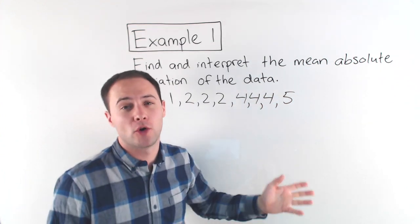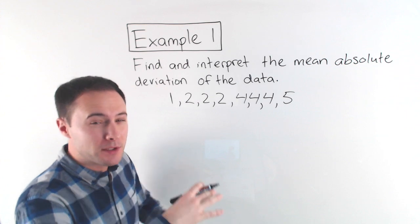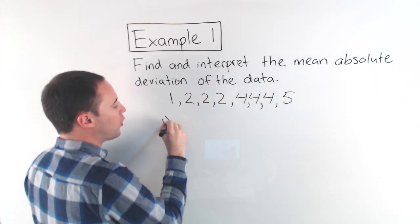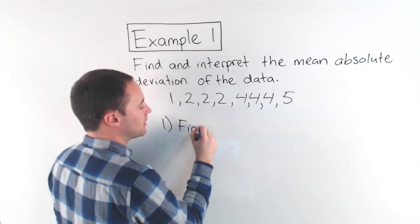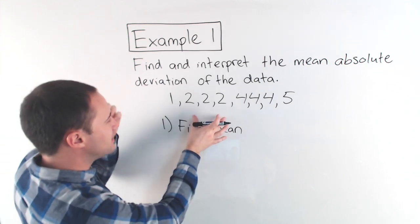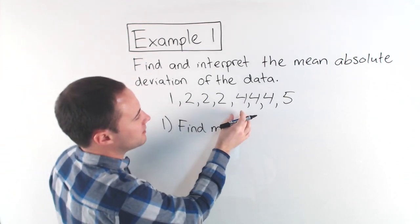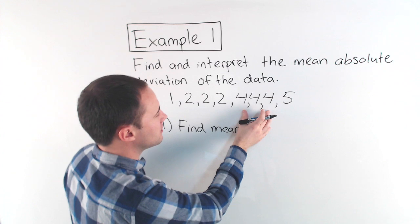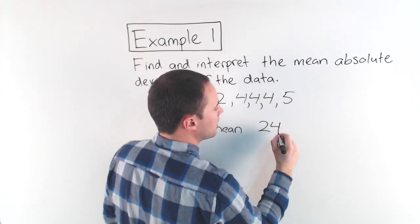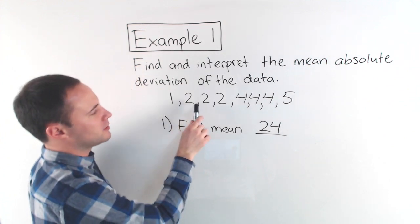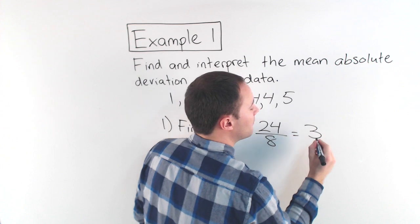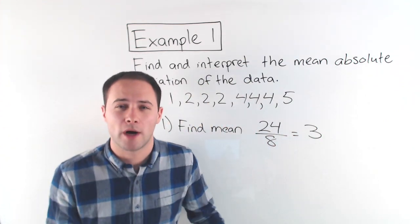Our data is already in order. Step one is to find the mean. If I add these up: 6, 7, plus 12 is 19, plus 5 is 24. That's the sum divided by how many there are — 8 values — and I get a mean of 3.